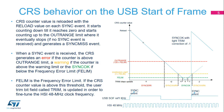The counter starts counting down till it reaches zero, then starts counting up to the outrange limit, where it eventually stops if no sync event is received before, and generates a sync miss event. A sync event received when the counter is below the outrange will fine-trim the HSI48, depending on the phelim 7-0 value.